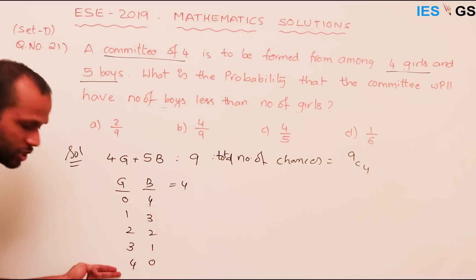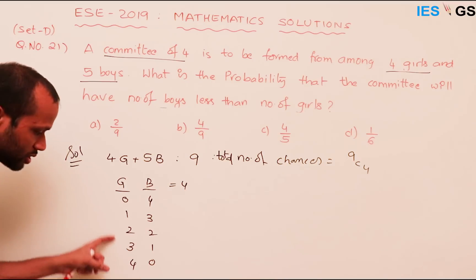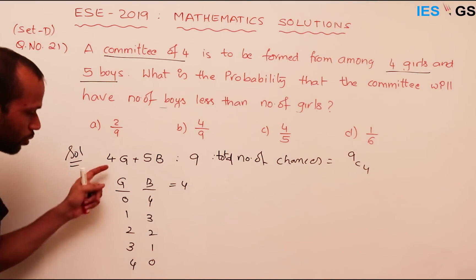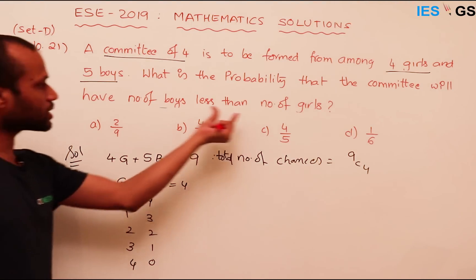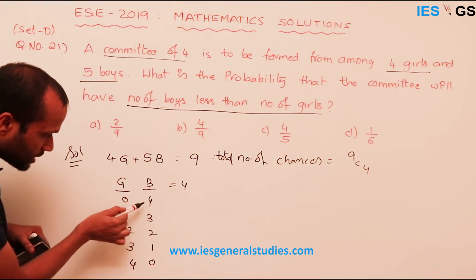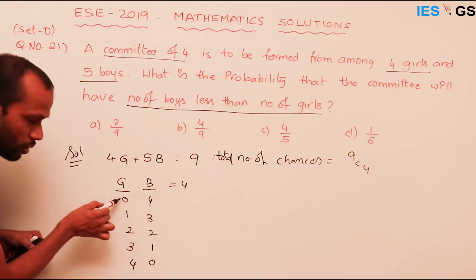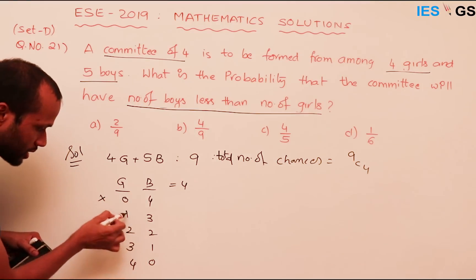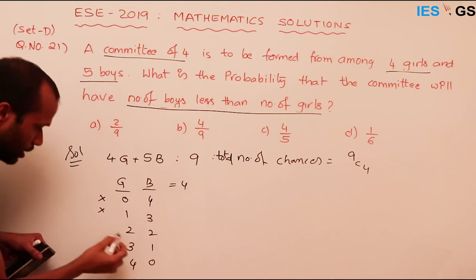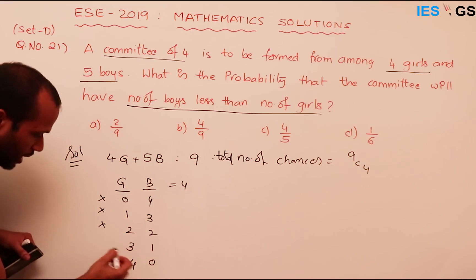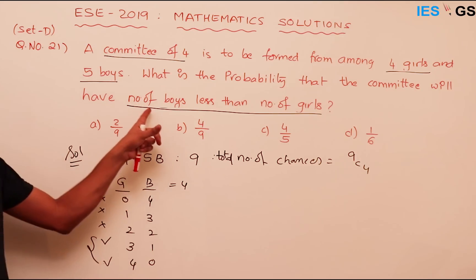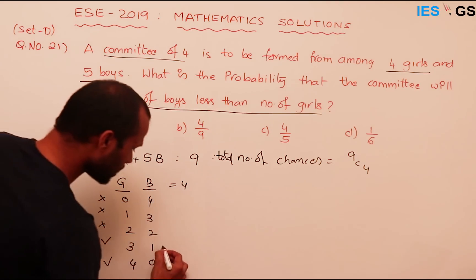These are all the possible conditions for selecting four people. Now, which of these satisfy the condition: number of boys less than number of girls? In the first case boys are four — boys are more. Three boys — boys are more. Two boys, two girls — they are equal, so this doesn't satisfy. In the last two cases, number of boys are less, so these two conditions satisfy the given criteria.